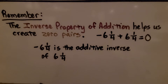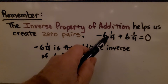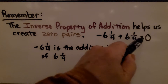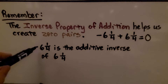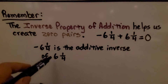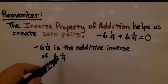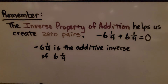Remember, the inverse property of addition helps us create zero pairs. If we have negative 6 and one-fourth plus 6 and one-fourth, it equals zero. Because negative 6 and one-fourth is the additive inverse of positive 6 and one-fourth and vice versa. Together, they equal zero.